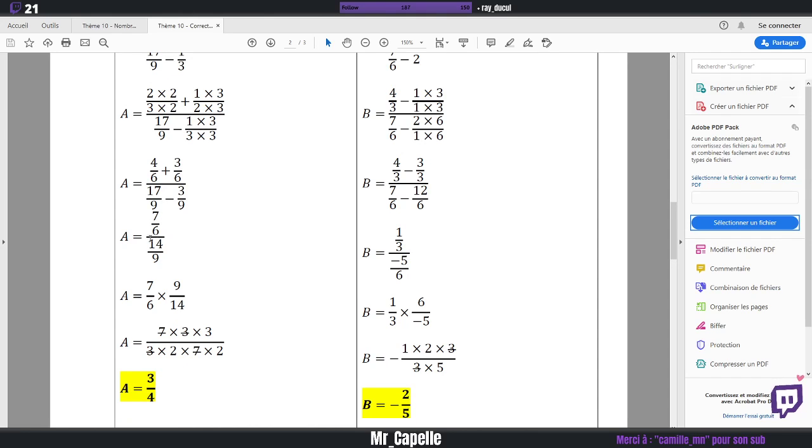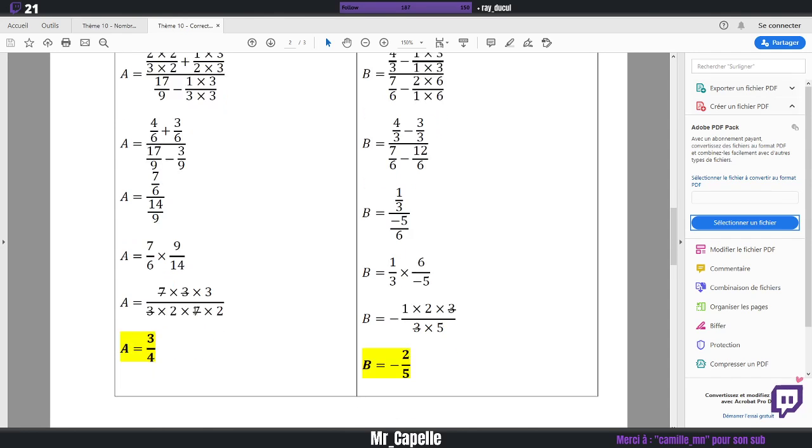Donc, ici, je fais x2, x2, x3, x3. Et ça me fait, du coup, 4 sur 6, plus 3 sur 6 pour le haut. Mais je fais aussi la même chose en bas. En bas, il faut que ce soit au même dénominateur. Il suffisait de faire x3 ici. On obtenait 3 sur 9. Et du coup, 17 neuvième, moins 3 neuvième, c'est 14 neuvième. Et du coup, on obtenait une fraction divisée par une autre fraction. Ça correspond à multiplier par l'inverse de la fraction du bas. Donc, l'inverse de 14 neuvième, c'est 9 sur 14.